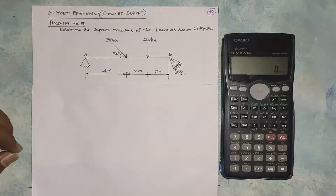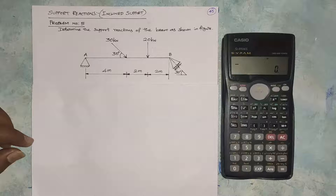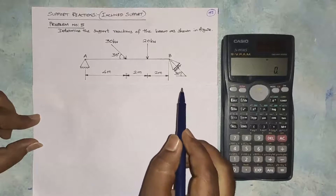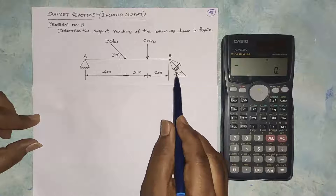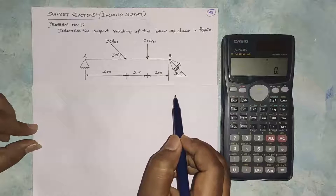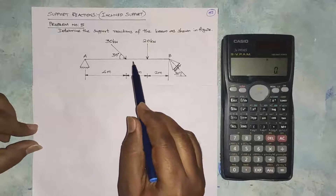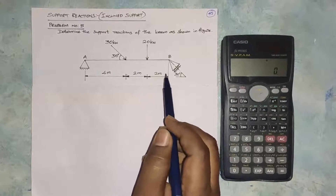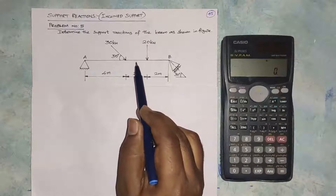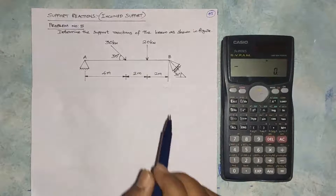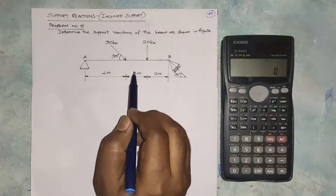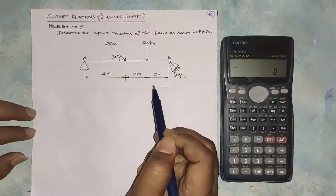Now, the load is one point load. If you find an inclined support — as discussed in the previous video — there will be a few steps. If the support is an inclined support, it will not be treated as a simple point load. We will find a simple point load separately. So this is different.